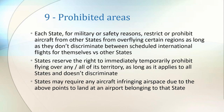Article 9 covers prohibited areas. Each state, for military or safety reasons, may restrict or prohibit aircraft from other states from overflying certain regions, as long as they don't discriminate between scheduled international flights for themselves versus other states. A good example of this right being extensively used is in China, where less than 30% of their airspace can be used by commercial airlines. States also reserve the right to immediately and temporarily prohibit flying over any or all of their territory as long as it applies to all states and doesn't discriminate — this right was most famously used on September 11, 2001 when the USA grounded all civil aircraft across the country. Finally, states may require any aircraft infringing airspace due to the above points to land at an airport belonging to that state.